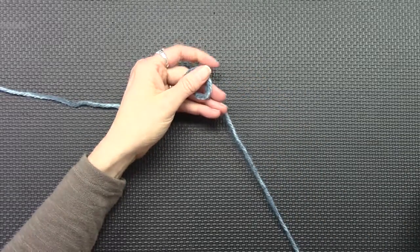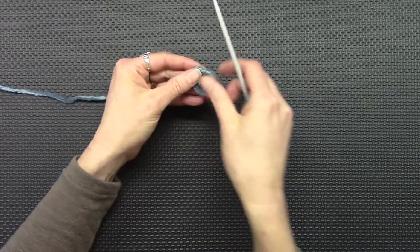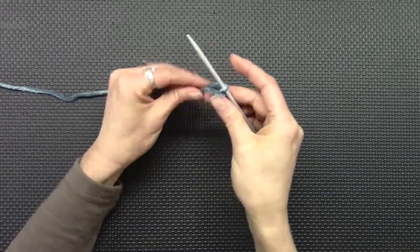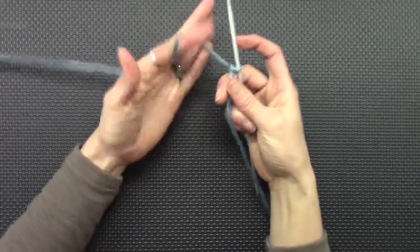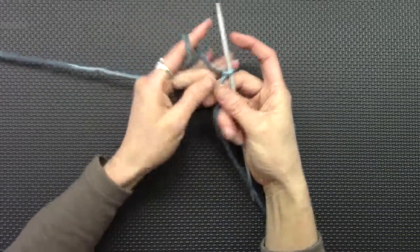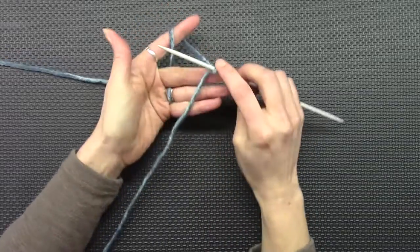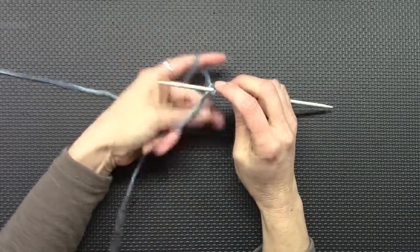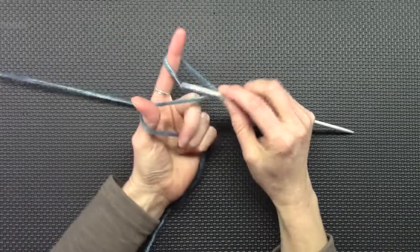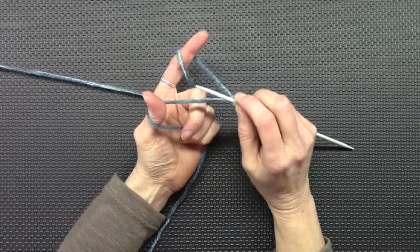I'm going to do the standard slip knot, just like you're going to do the long tail cast on. The yarn to the wool is on the back. The long tail that ends is down. And grab your yarn like you're going to do the traditional long tail cast on.